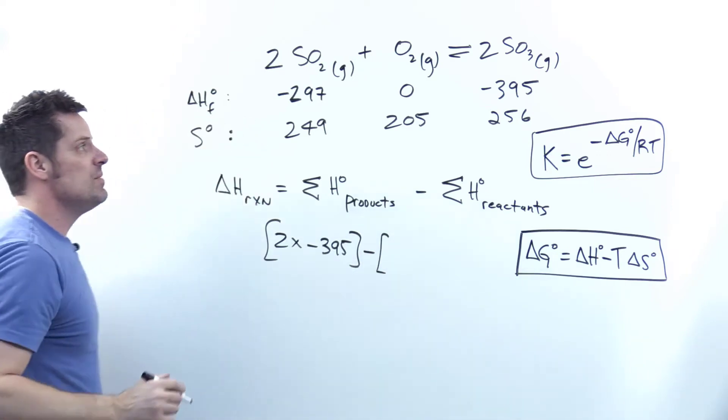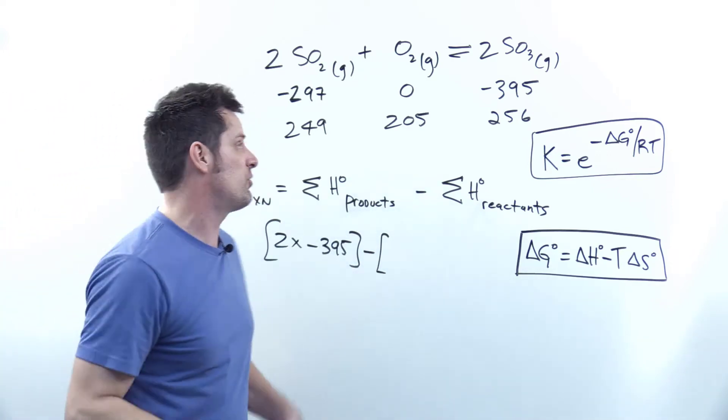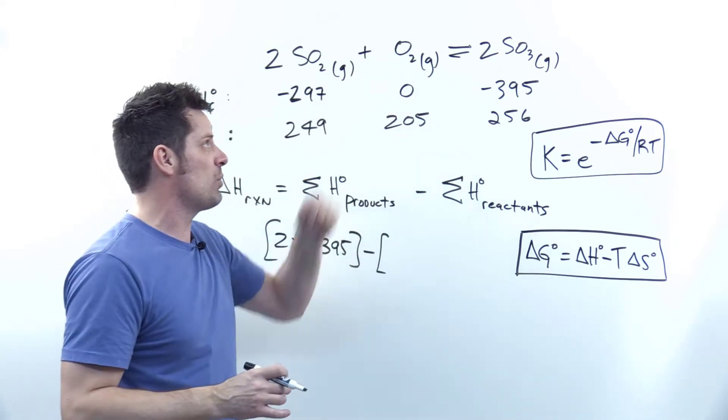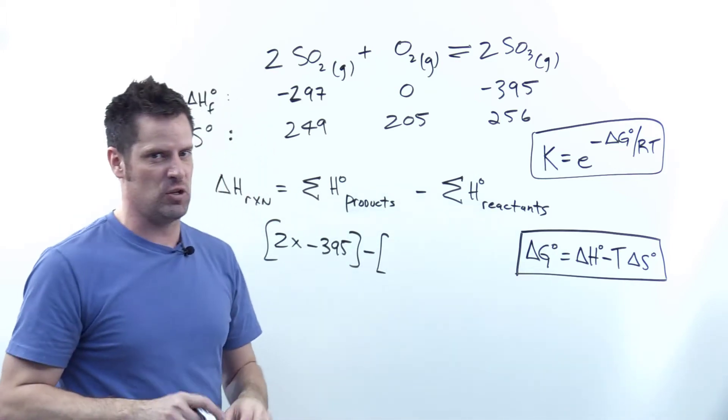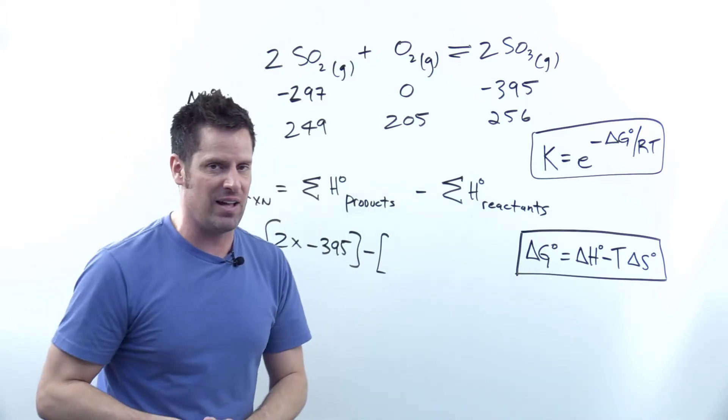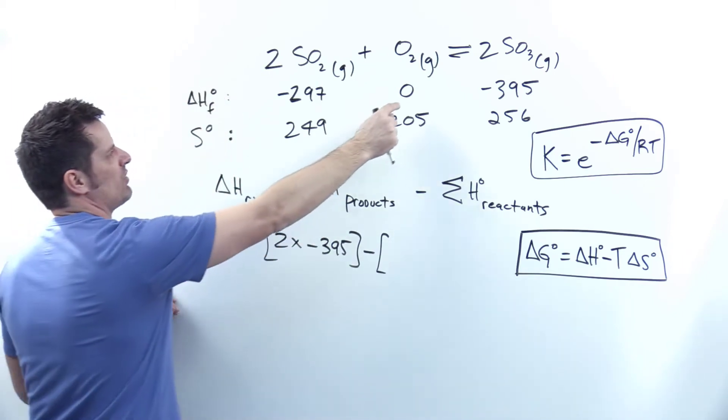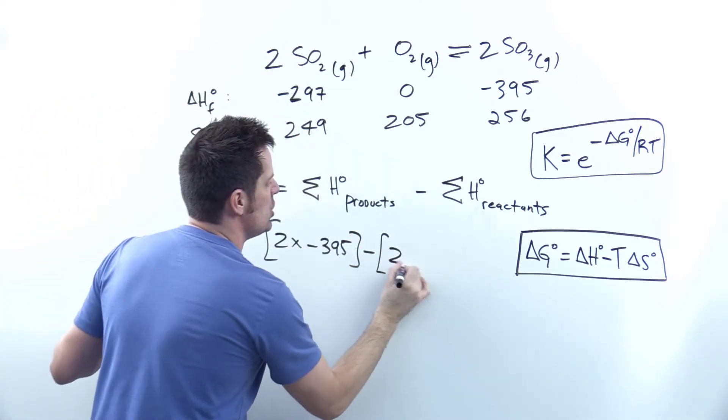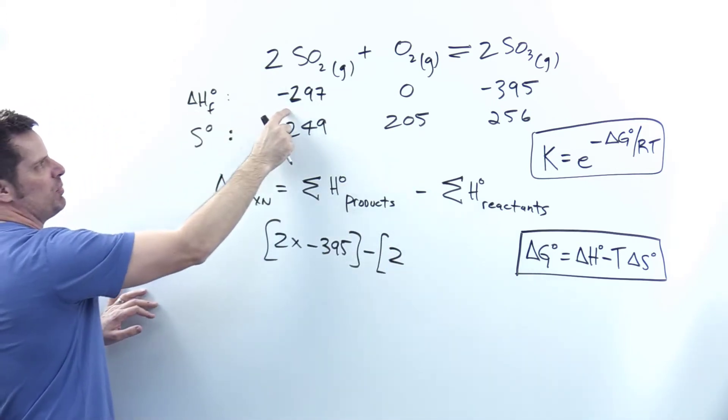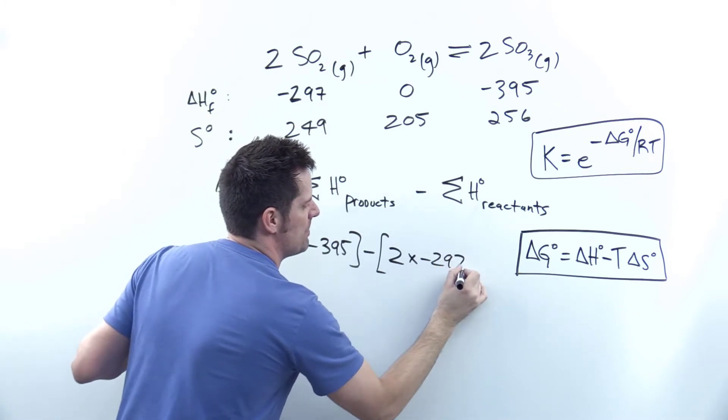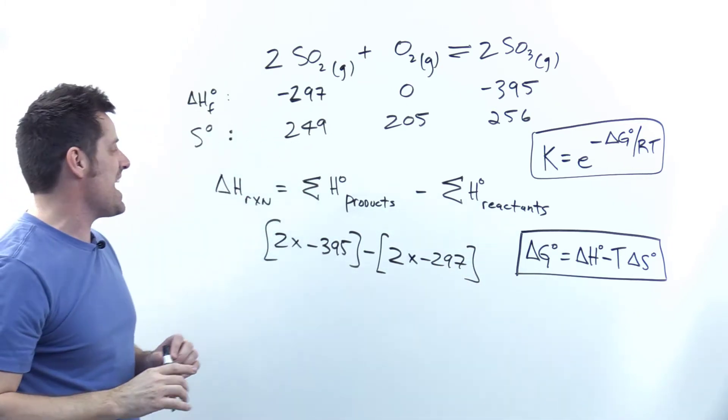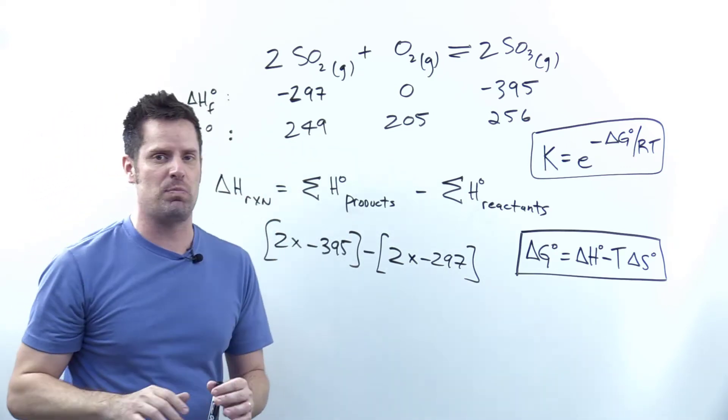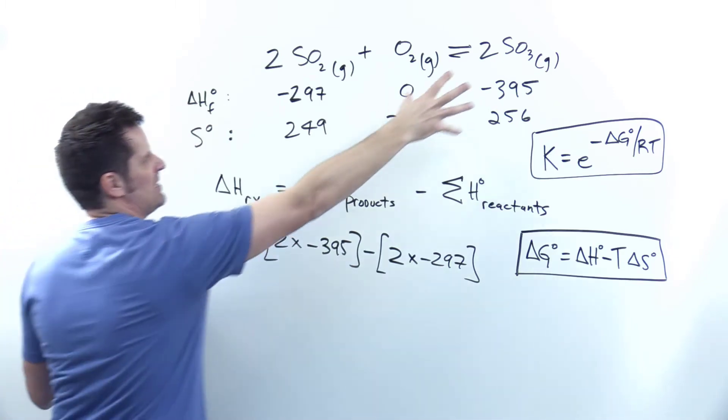Now I subtract the sum of all my reactants. Delta H of formation for substances in their elemental states are zero under standard conditions—that's not true of entropy values, but is true of enthalpy values. I do have to worry about this: I have a 2 coefficient, so I multiply it by negative 297. The units for delta H are kilojoules per mole.